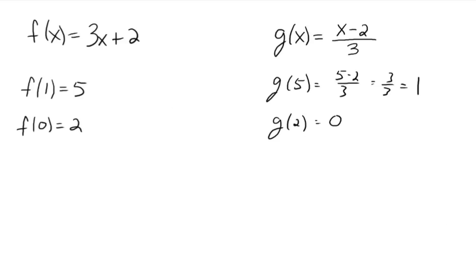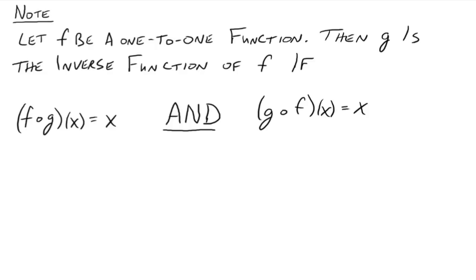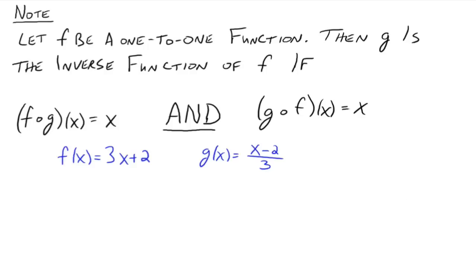There's a formal way to think about that. Let f be a one-to-one function. Then g is the inverse function of f if f composed with g of x is equal to just x — the identity function — and g composed with f of x is equal to x, the identity function. Both compositions have to happen, and if both compositions get you down to the identity function, then f and g are inverses of each other.